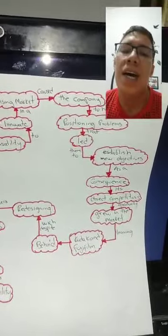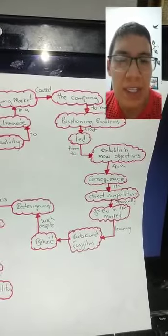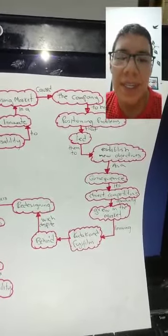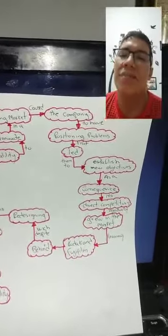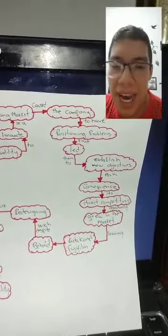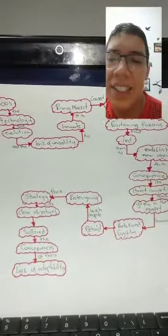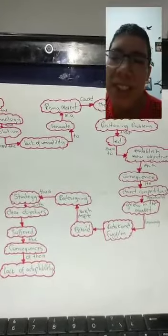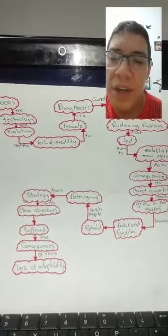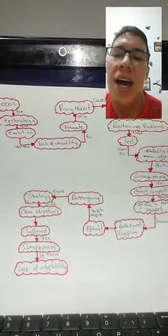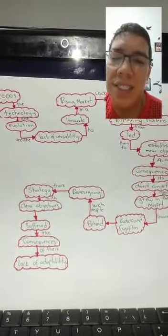As a consequence, these direct competitors gradually grew in the market, leaving Kodak and Fujifilm behind. Despite revising their strategy with clear objectives, they suffered the consequences of their lack of adaptability.